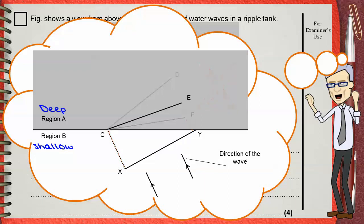Let's examine CE. X will reach C and Y will be at E. It's clear that YE is a shorter distance than XC, meaning the wave would be slower at end Y and faster at end X. Since X reaches C in the same time Y reaches E, CE is also an incorrect position, because the wavelength and wave speed in the deep region must be greater than in the shallow region.